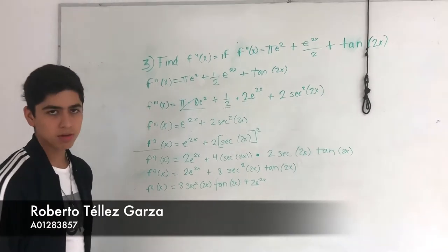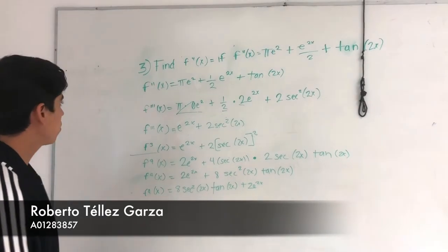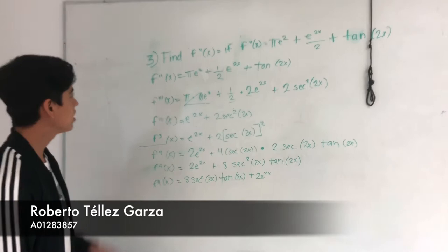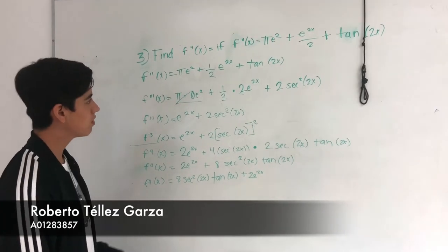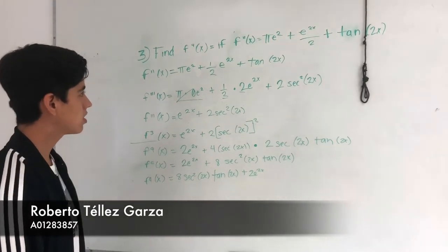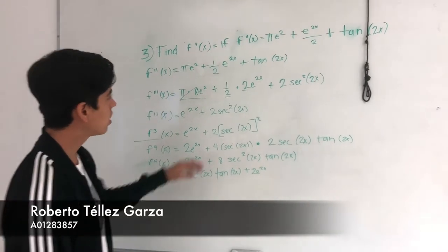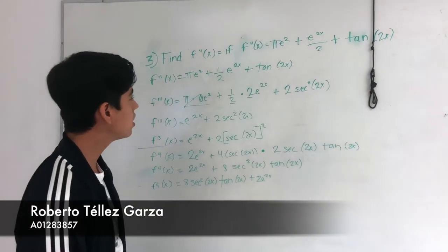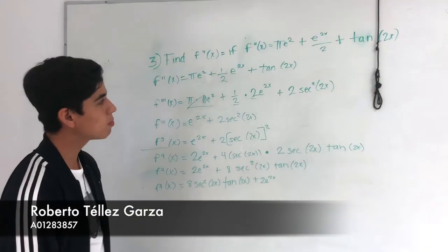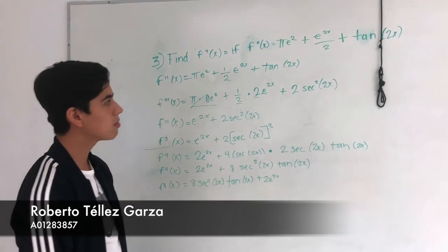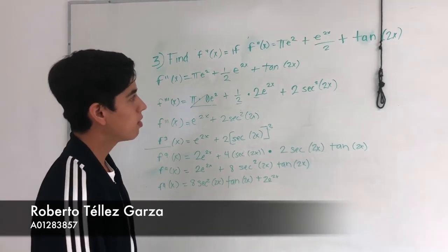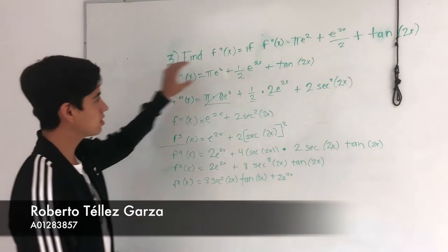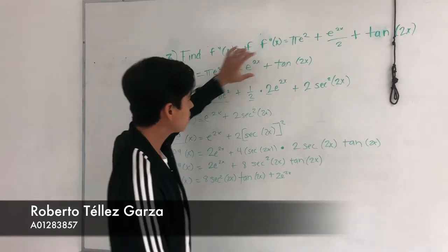I'm going to solve problem number three. It says: find the fourth derivative of x, given that the second derivative of x equals pi times e squared plus e to the power of 2x divided by 2, plus tan(2x). I pass exactly what we have there to here.